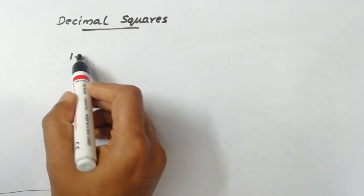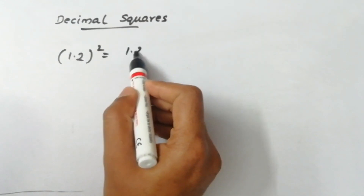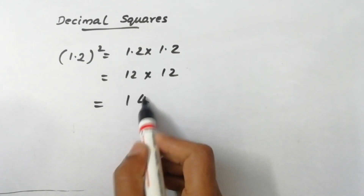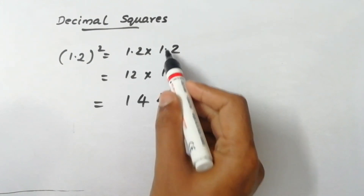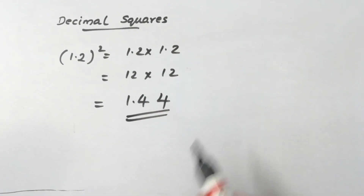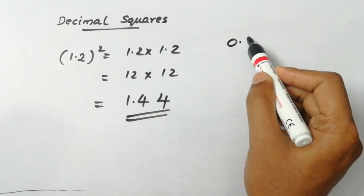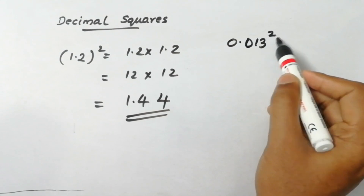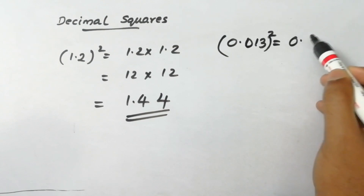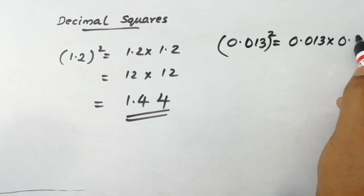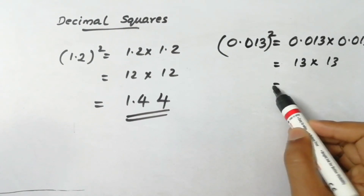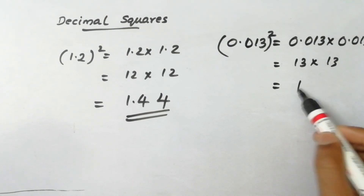The decimal square is 1.2 the whole square. What is this? 1.2 into 1.2. If you want to do this, it will be 0.44 — it will be 1 — it will be 2 — it will be 1.44. If you want to do this, you will get 0.013. It will be 0.013. This is 1.3.2. This tells you 0.013. The decimal square is the decimal square — it will be 2.012.